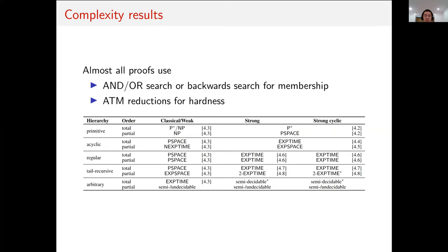Proofs can also be summarized as using and-or searches or backwards search from a goal for membership and standard alternating Turing machine reductions for hardness. If you're interested in the proofs, we can have a gander at our paper. Thanks so much for your time.